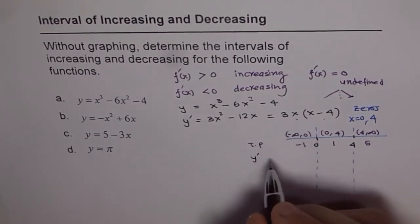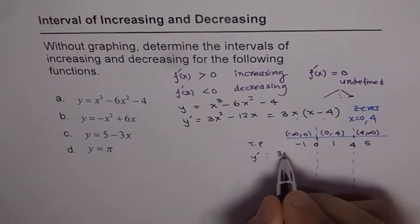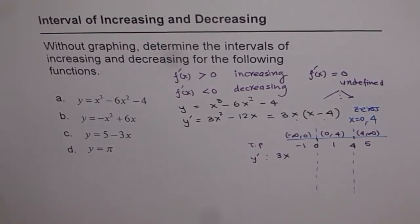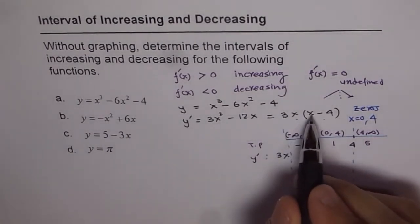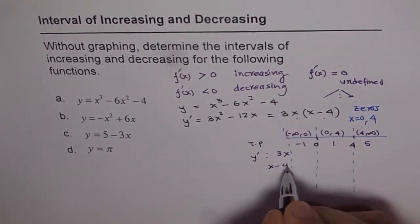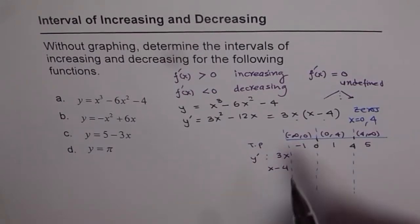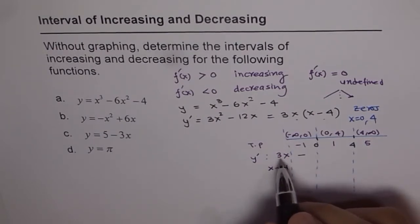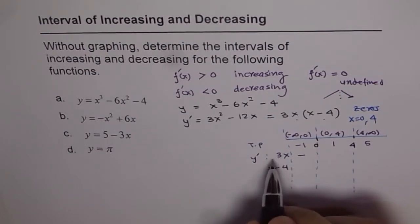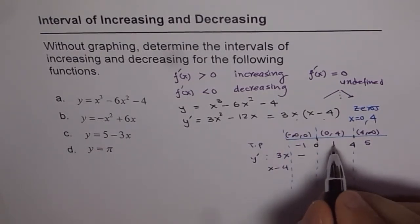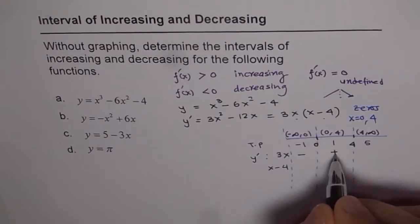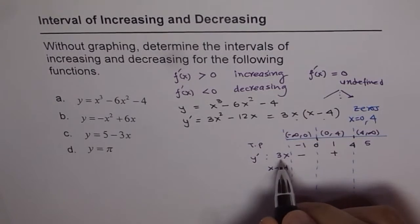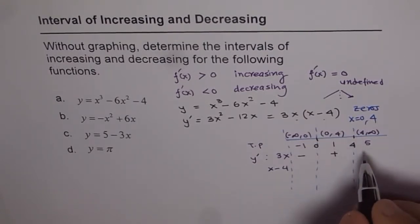To test y', we write the factors. The two factors are 3x and x minus 4. For the factor 3x: plugging in minus 1 gives negative 3, so negative sign. Plugging in 1 gives positive 3, so positive. Plugging in 5 gives positive 15, so positive. We are interested in the sign, not the actual value.